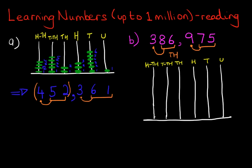We're now going to draw the numbers. Let's start with the units on the right hand side — here we have five: one, two, three, four, five. The tens we have is seven: one, two, three, four, five, six, seven. How many hundreds are there? There are nine: one, two, three, four, five, six, seven, eight, nine. Thousands — there are six: one, two, three, four, five and six.